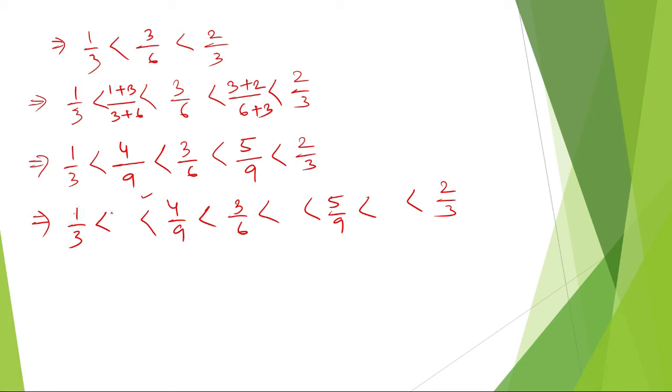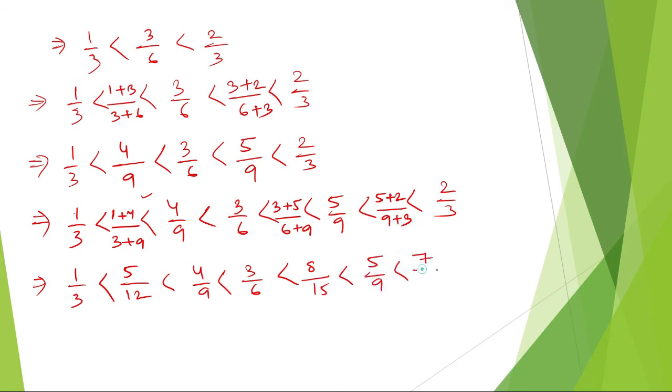So, here, it will be (1+4)/(3+9). Here, it will be (3+5)/(6+9). Here, it will be (5+2)/(9+3). So, let me write down the final answer. 1+4 is 5, by 9+3 equals 12, so 5/12. 4/9 as it is, 3/6 as it is. 3+5 is 8, 6+9 is 15, so 8/15. 5/9. 5+2 is 7, 9+3 is 12, so 7/12, and 2/3.